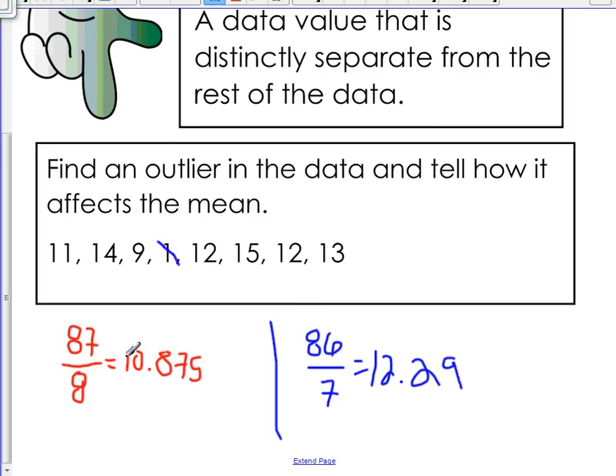So as you can see, the means are very, very different. We have 10.87 and 12.29. So what this is showing us is that that outlier, even though it's a very small number of only one, it can make a difference. And outliers can change the way you look at a set of data.